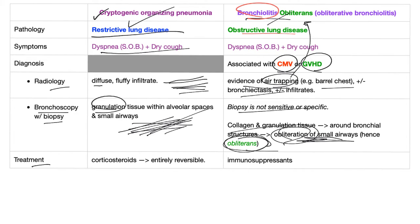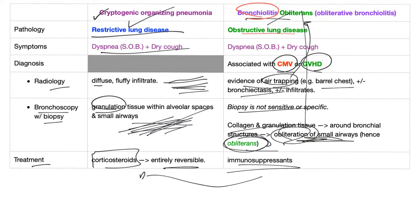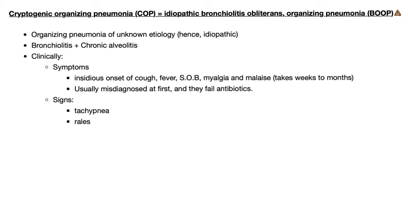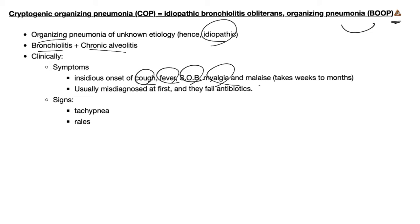How to treat cryptogenic organizing pneumonia: give steroids — it is entirely reversible. For bronchiolitis obliterans, give immunosuppressants, which are similar to steroids. Cryptogenic organizing pneumonia is the same thing as idiopathic bronchiolitis obliterans organizing pneumonia. Combined together we call them BOOP. It represents organizing pneumonia of unknown etiology — that's why we call it idiopathic. It involves bronchiolitis plus chronic alveolitis. Clinically, you find onset of cough, fever, shortness of breath, myalgia, and malaise.